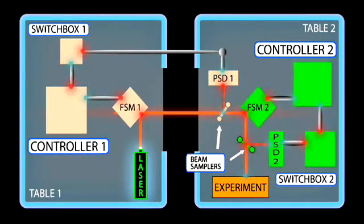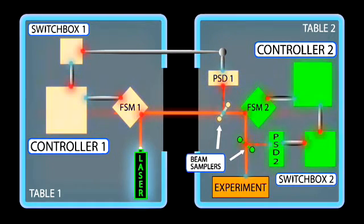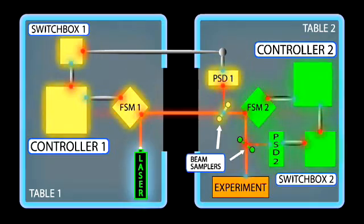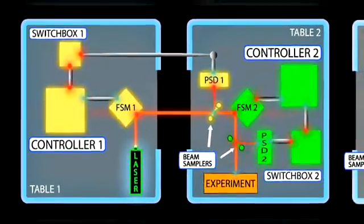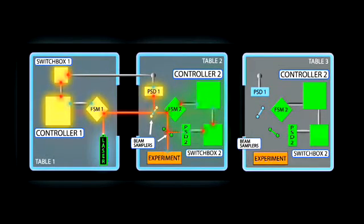Two switch networks are utilized to ensure that the polarity of the position sensing detector signals are consistent with those of the controllers. This concept could continue onto a third table by incorporating a second beam stabilization system.